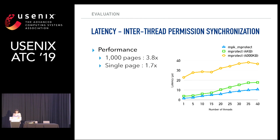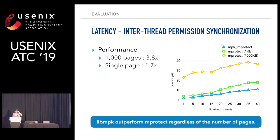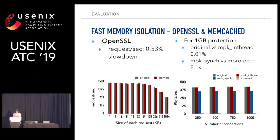We also evaluated the latency from permission synchronization. With multiple contiguous pages, LiveMPK permission synchronization outperforms MProtect by 3.8 times, and with a single page it still outperforms MProtect by 1.7 times. LiveMPK outperforms MProtect regardless of the number of pages. When applied to OpenSSL and memcached to protect private keys and in-memory cached data of more than one gigabyte, we observed negligible overhead for both cases, and our synchronization API outperformed mprotect by eight times.